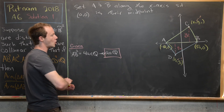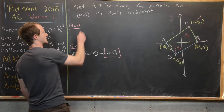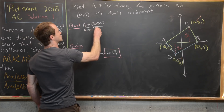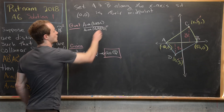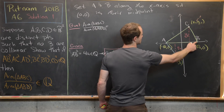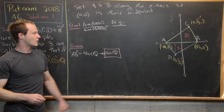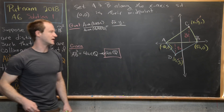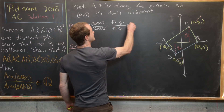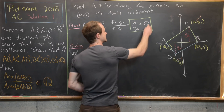Our goal in terms of our coordinates is: area of triangle ABC divided by area of triangle ABD equals (√a · y1) / (√a · y2) = y1/y2. So our goal is to show that y1/y2 is indeed a rational number.